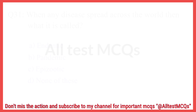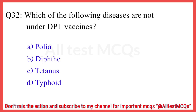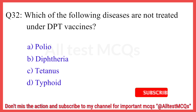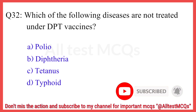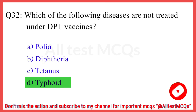Question number 32. Which of the following diseases are not treated under DPT vaccines? The correct answer is option D: Type I.